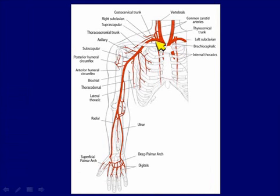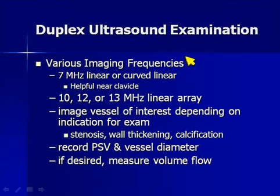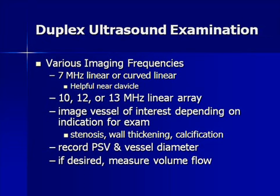The normal upper extremity anatomy shows that once we get out onto the arm, it's a pretty easy scan of the brachial, radial, and ulnar vessels. The challenge comes at the base of the neck because the sternum and clavicle hide portions of the brachiocephalic and subclavian vessels. A curved linear array transducer will help insonate these vessels near the clavicle. We'll use a mid-range transducer for subclavian evaluation and a high-frequency transducer for the smaller, more superficial radial and ulnar arteries on the forearm. We'll look for stenosis, calcification, wall thickening, record peak systolic velocity, vessel diameter, and in some instances volume flow.